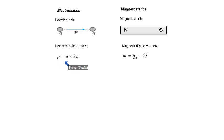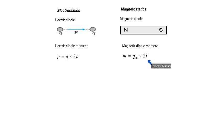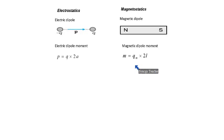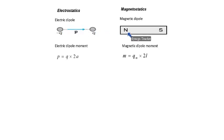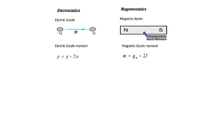Electric dipole moment is equal to the product of the charge and the distance between the charges. In magnetostatics, magnetic dipole moment is equal to pole strength multiplied by the magnetic length, that is, the distance between the two poles. Both electric and magnetic dipole moments are vector quantities. Electric dipole moment is directed from the negative to the positive charge. In general, the electric field is from positive to negative, but the electric dipole moment is from negative to positive charge. Similarly, for a bar magnet, outside the magnet the magnetic field lines go from north to south, but the magnetic dipole moment is from south to north.